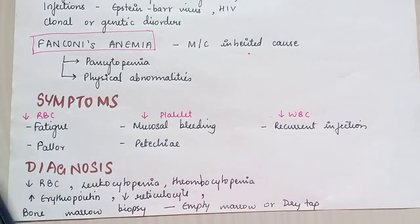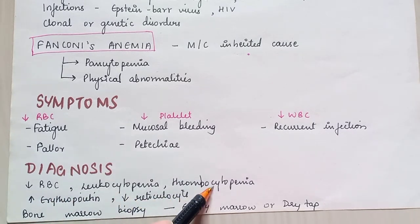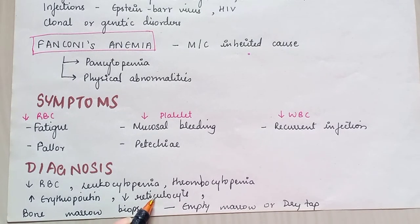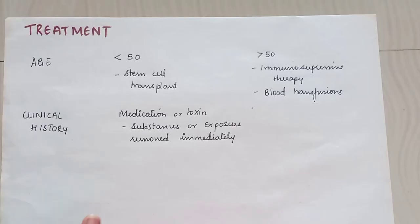For diagnosis, laboratory investigations show decreased RBC, leukocytopenia, thrombocytopenia, increased erythropoietin, and decreased leukocytes. Bone marrow biopsy reveals empty marrow and dry tapping, which are key diagnostic findings.